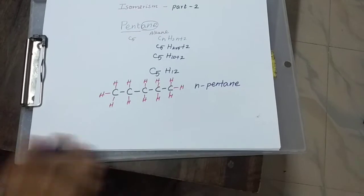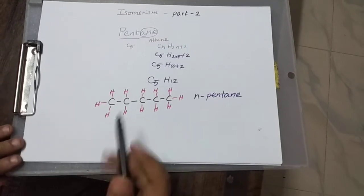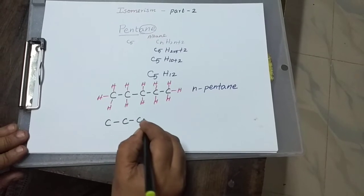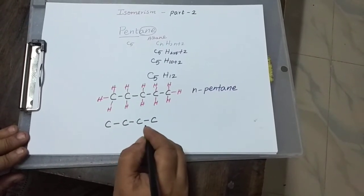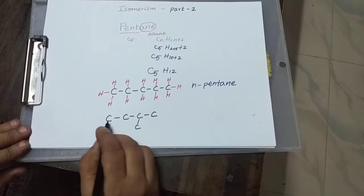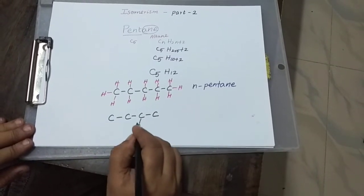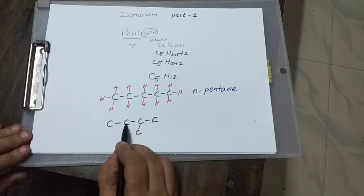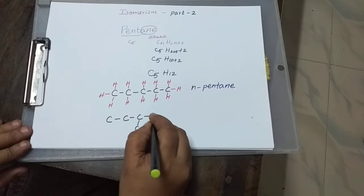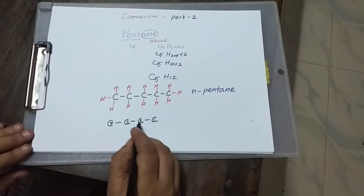Now the second isomer: it will be a branched chain. We take 1 carbon as a branch. In the main chain we have carbons 1, 2, 3, 4, and 1 carbon as a branch. The branch should not be on the terminal carbons — placing it at the terminal is like a continuity. So the branch is placed on an interior carbon. When we number the chain, the branch should get the least number, so it goes on carbon number 2.